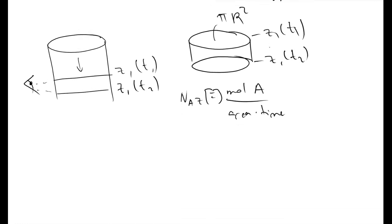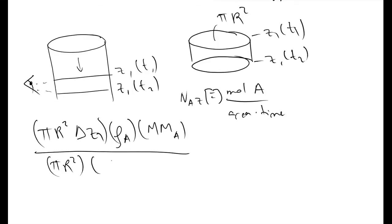Looking at this relationship, the volume change of A over time would be equivalent to the area of the base, pi R squared, the radius of your Arnold cell, times delta Z1, the change in the height over that time period. Then we multiply this quantity by the density of your species A, and multiply this by the molecular weight of your species A. We divide this quantity by the area, pi R squared, and divide it by the change in time, the time period you were looking at your Arnold cell.